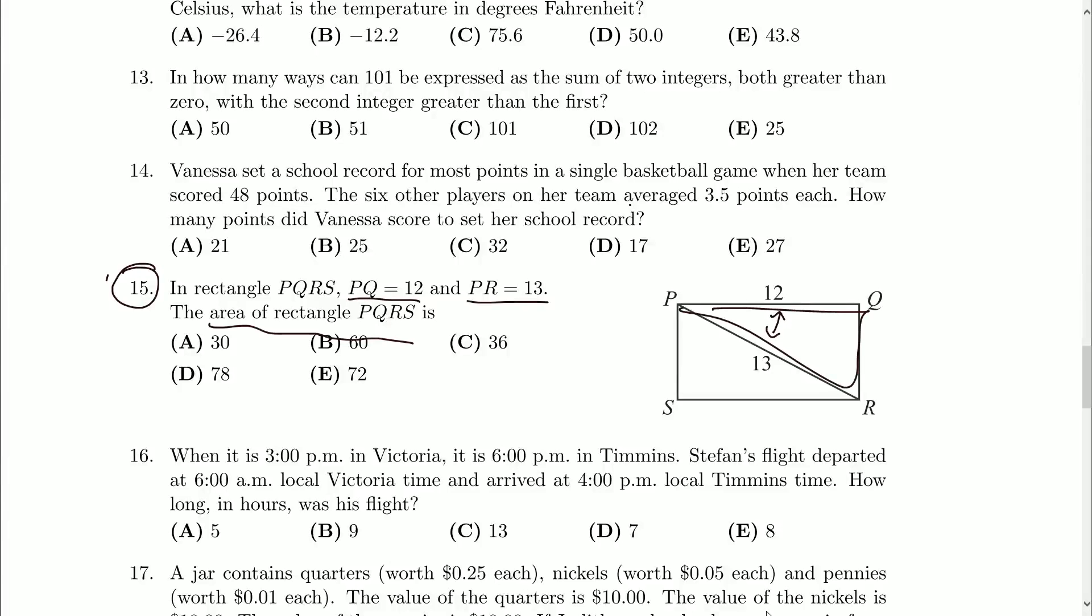Well how do we figure out areas for rectangles? If we knew one side and the other side, the length and the width, we just multiply those together. Another plan of attack might be, we've got two triangles here, if I knew their areas I could add them up. But we're going to go with the first method, and because we've got 12 here, if only we could figure out QR. And that's where the 13 and 12 are going to come in.